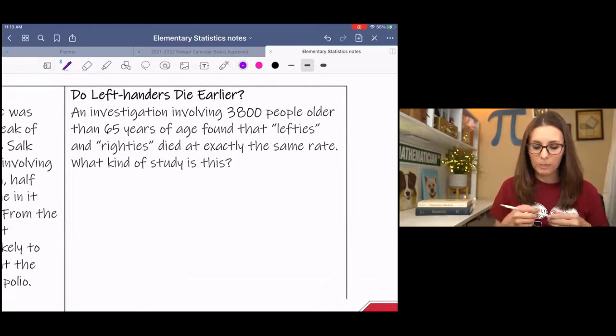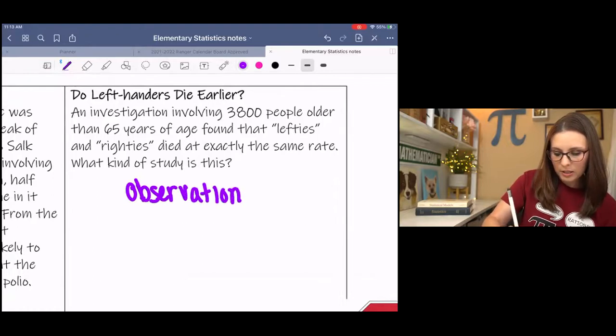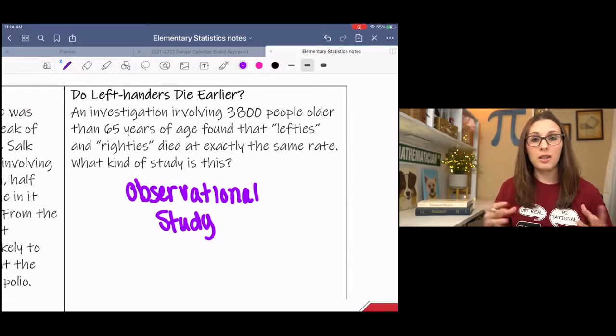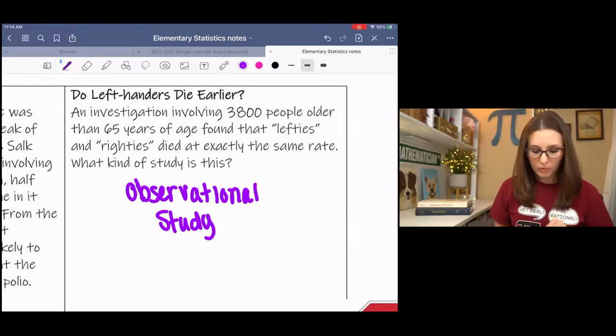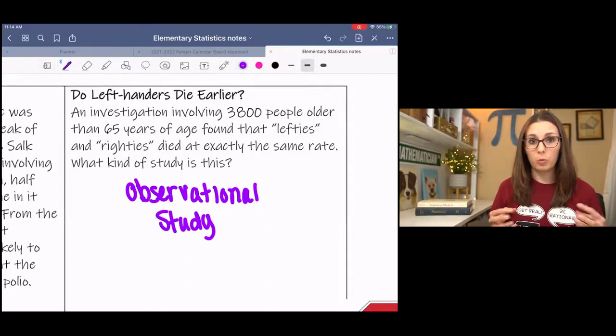And so they did a bunch of studies to see if it really mattered and basically they found out that it didn't. And so this would be an observational study because they didn't impose left-handedness on anybody. They simply just watched to see who was left-handed, who wasn't, and then the age at which they died. So this was observational, where the population would be maybe all people older than 65. And then the sample would be the 3,800 people that were chosen.